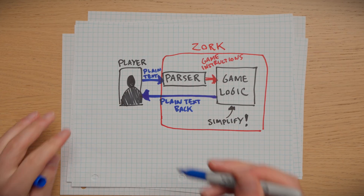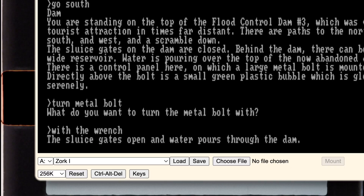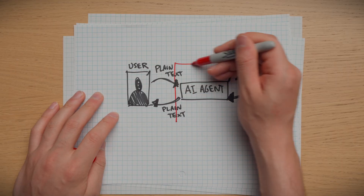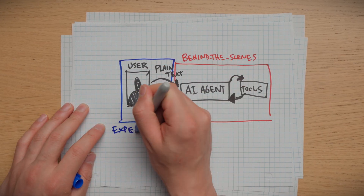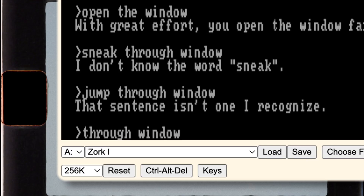This is what gave Zork the illusion of intelligence. Players don't see any of this stuff happening in the background — they just spoke to the computer in the way that they understood the world, and the computer just got it. Because of this, Zork is cited as a direct inspiration for the design of modern AI agents that give users a natural language interface and get things done behind the scenes. At the time, the magic was very real.